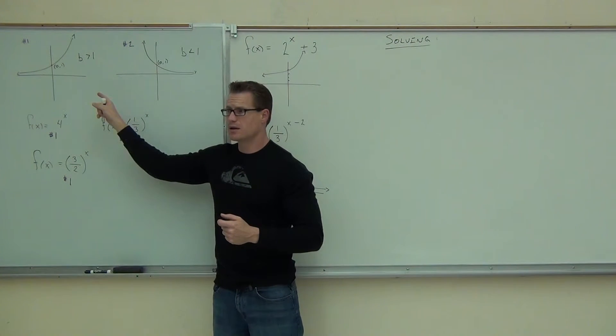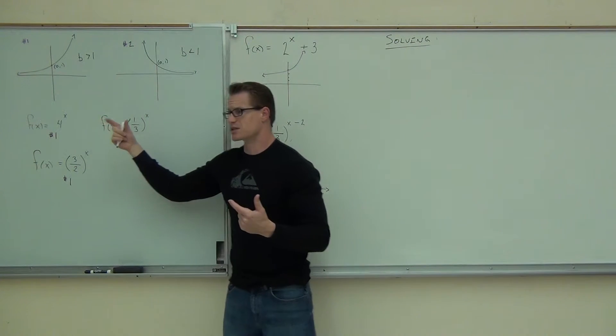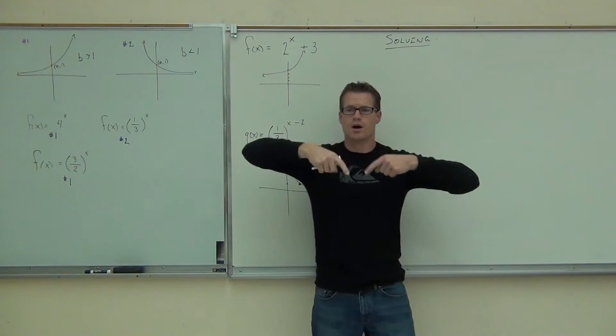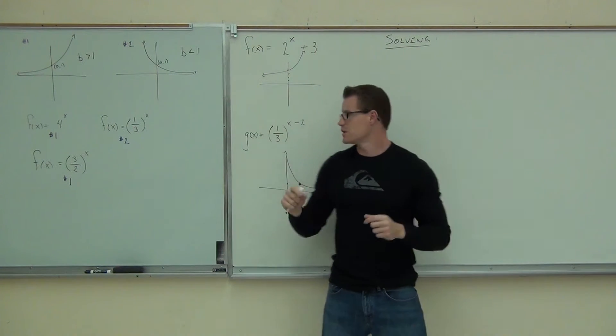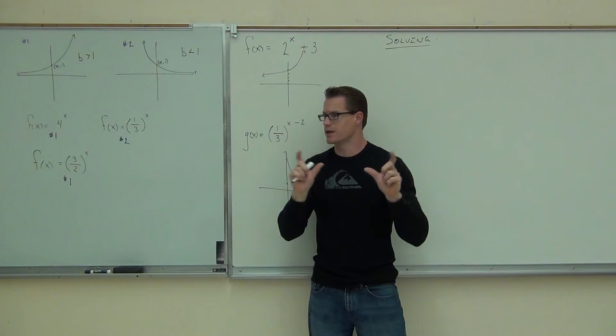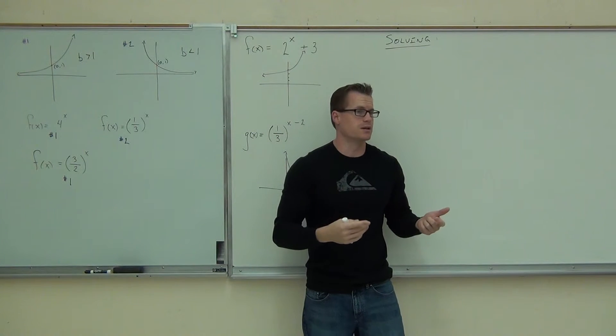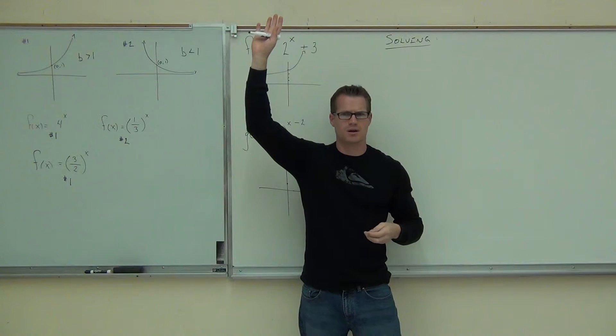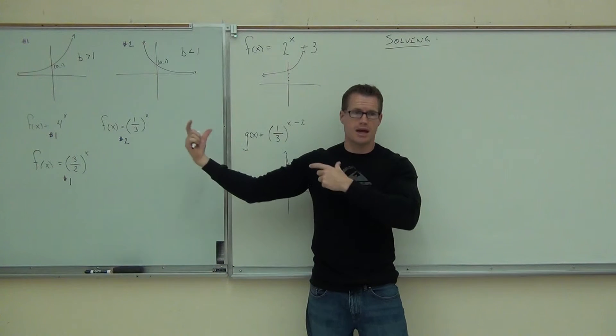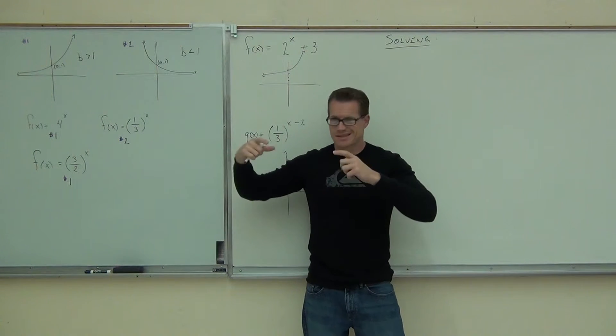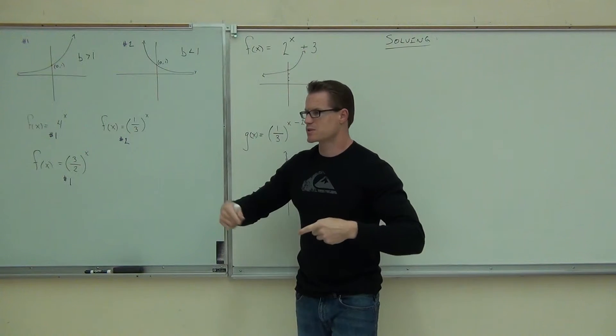But basically, I just want you to understand that we can still shift our graphs around, is what I want you to get across from this. Okay, not exactness. I want you to be able to identify what type of graph you should be looking at and how to shift these things. If it's after the function, again, we're vertical. If we're within the function, of course, we're going to be horizontal and it's kind of opposite of what you want to think it is.